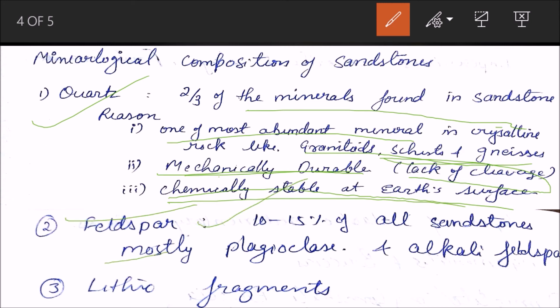Last is lithic fragments or the mineralogic rock fragments. Apart from these three - quartz, feldspar, and lithic fragments - we have accessory minerals, which I'll not be discussing. I'm just mentioning it that there are some other minerals called accessory minerals which can be used to distinguish one type of sandstone from other type.